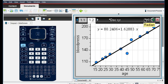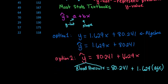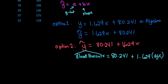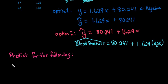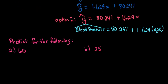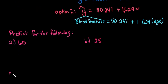So let's say that we wanted to predict values of X. So maybe we wanted to predict the blood pressure for the following ages. So let's say that we said 60. Let's say that we said 25. And let's say that we said 85.